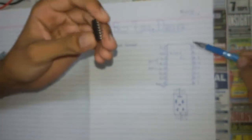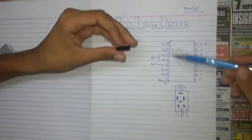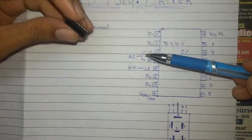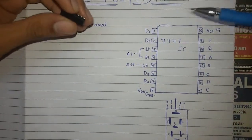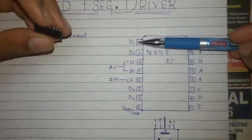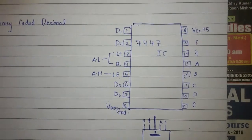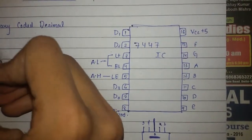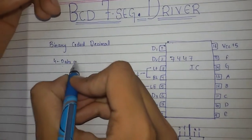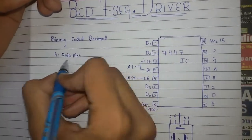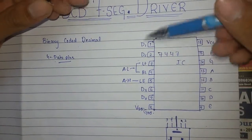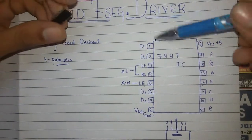The 7447 is a 16-pin IC. Here is the pin configuration of this IC - there are 16 pins total. From pins D1 to D4, there are four data pins from where you will give the input.